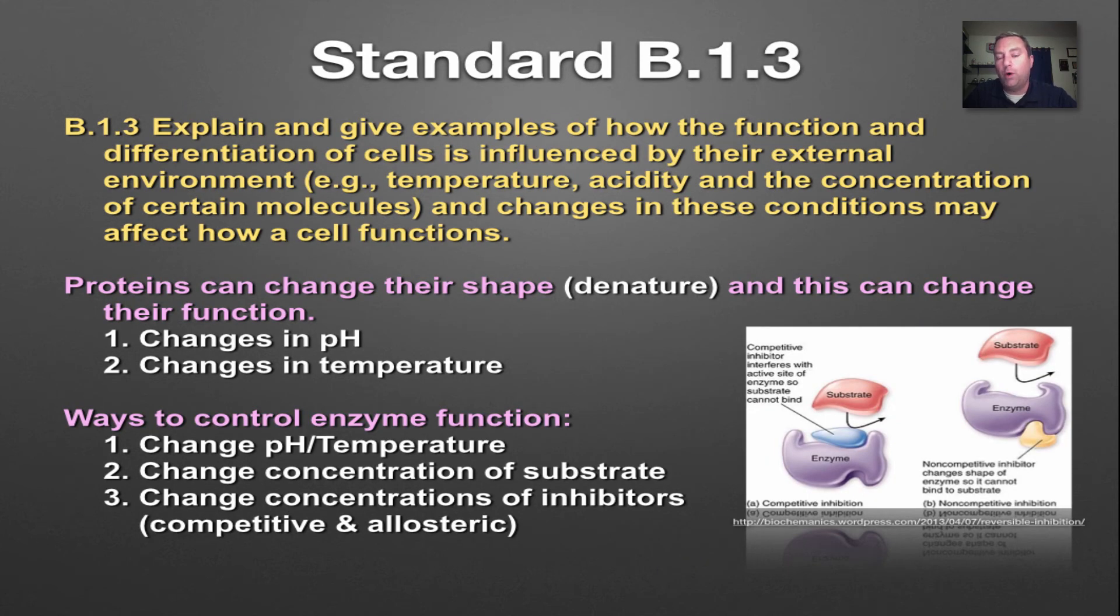Standard B1.3 deals with how the environment within and outside the cell can regulate how these molecules do their job. With proteins, their shape is really important. Things that can change their shape can make the protein work or not work. The main things that can change a protein shape—and remember that change in shape is called denature—are an increase or decrease in temperatures, specifically increasing the temperature, which will make the protein fall apart. Or rapid changes in pH can also do the same thing. If you change the shape of the protein, you're going to alter its function.